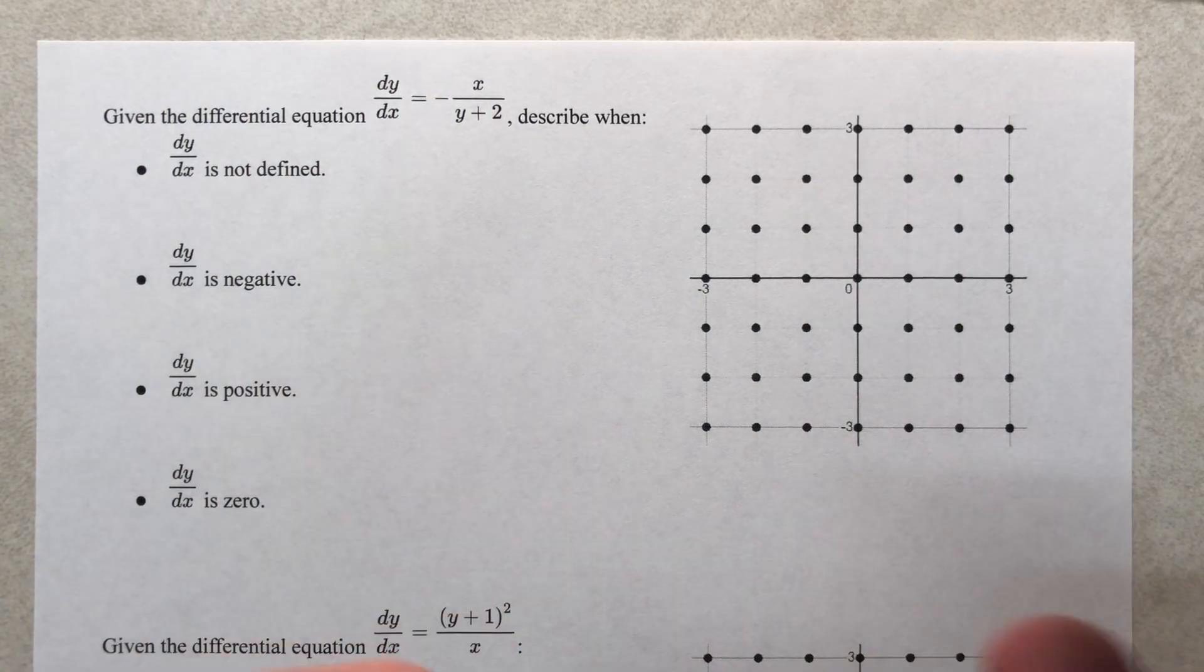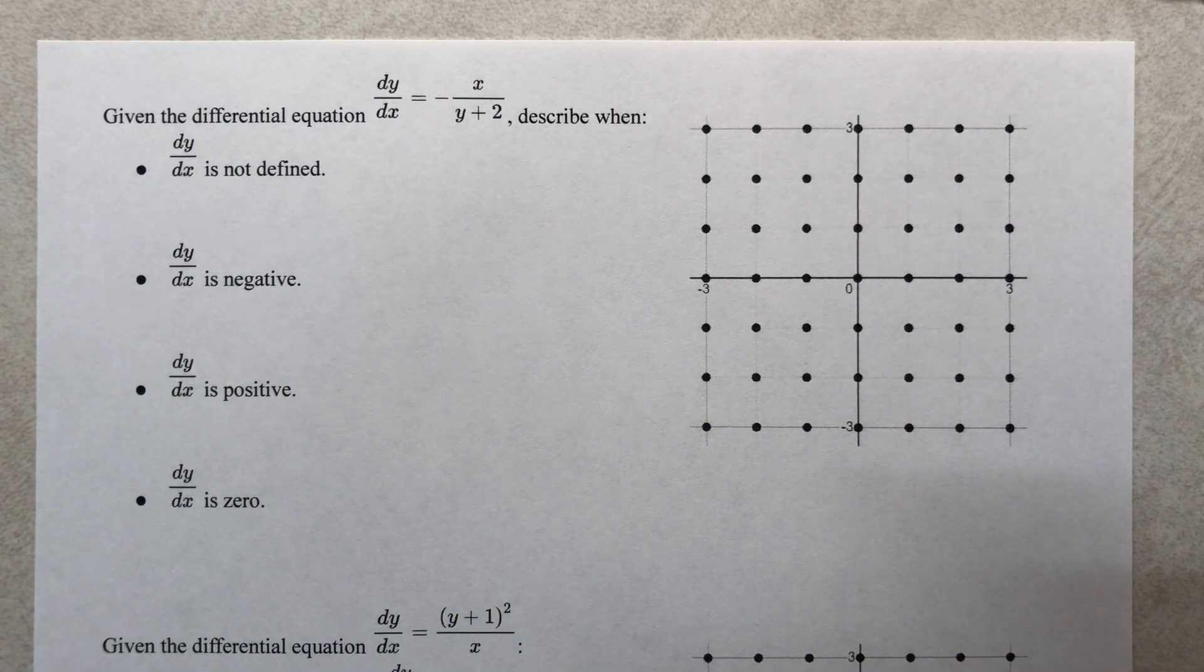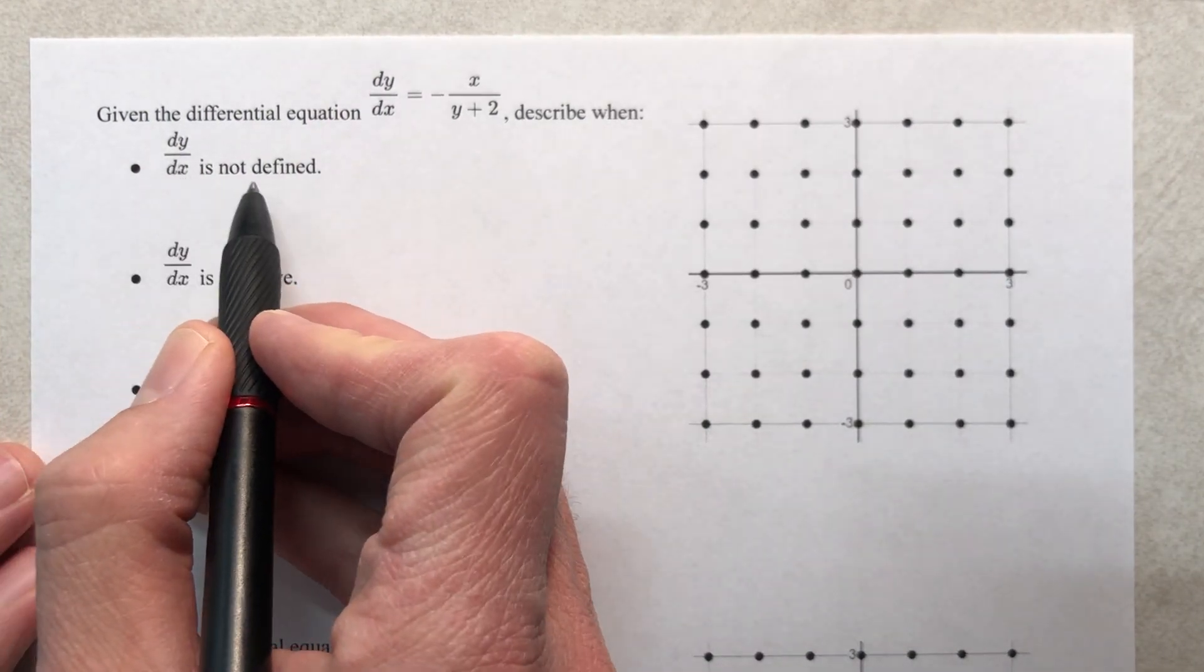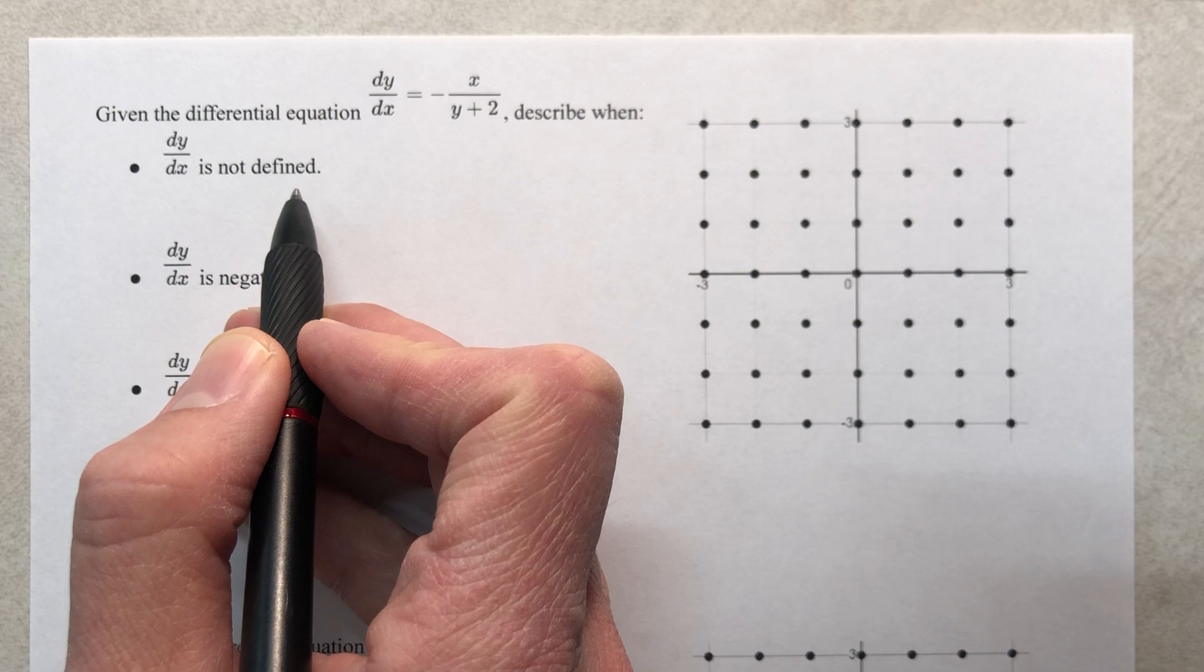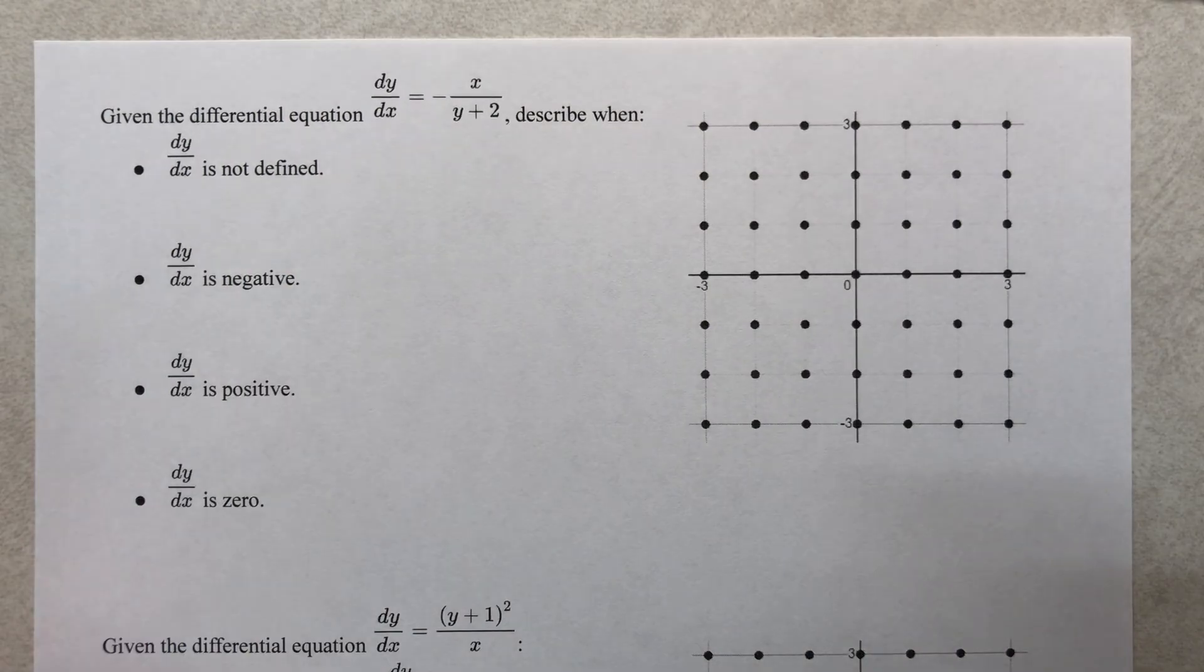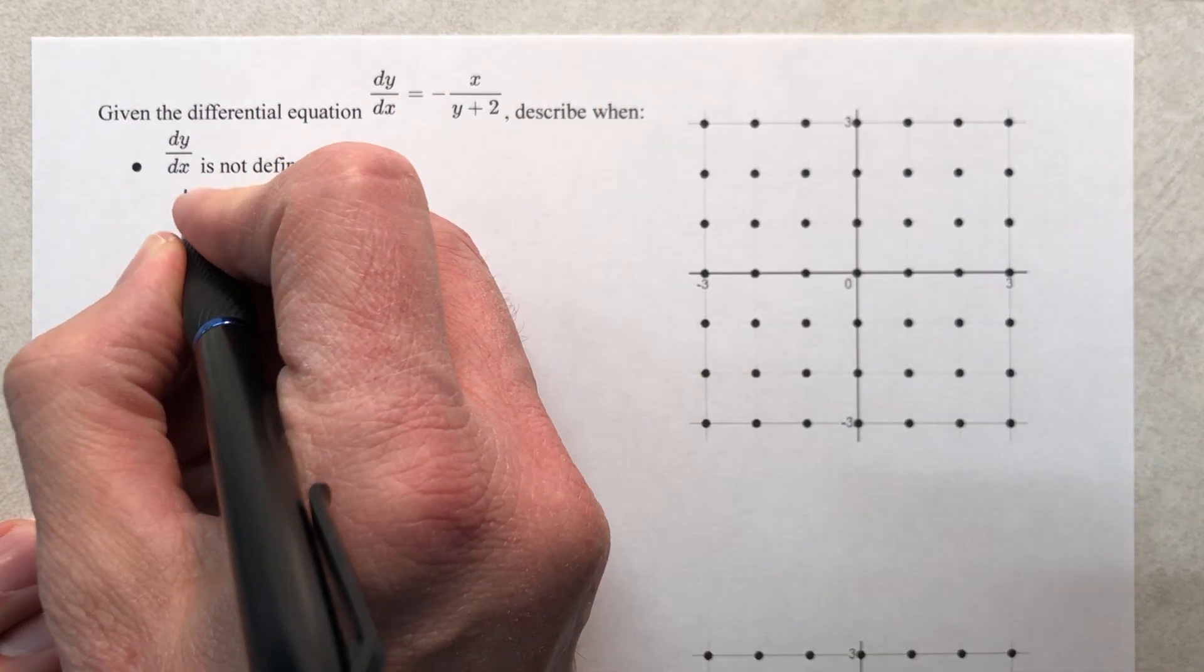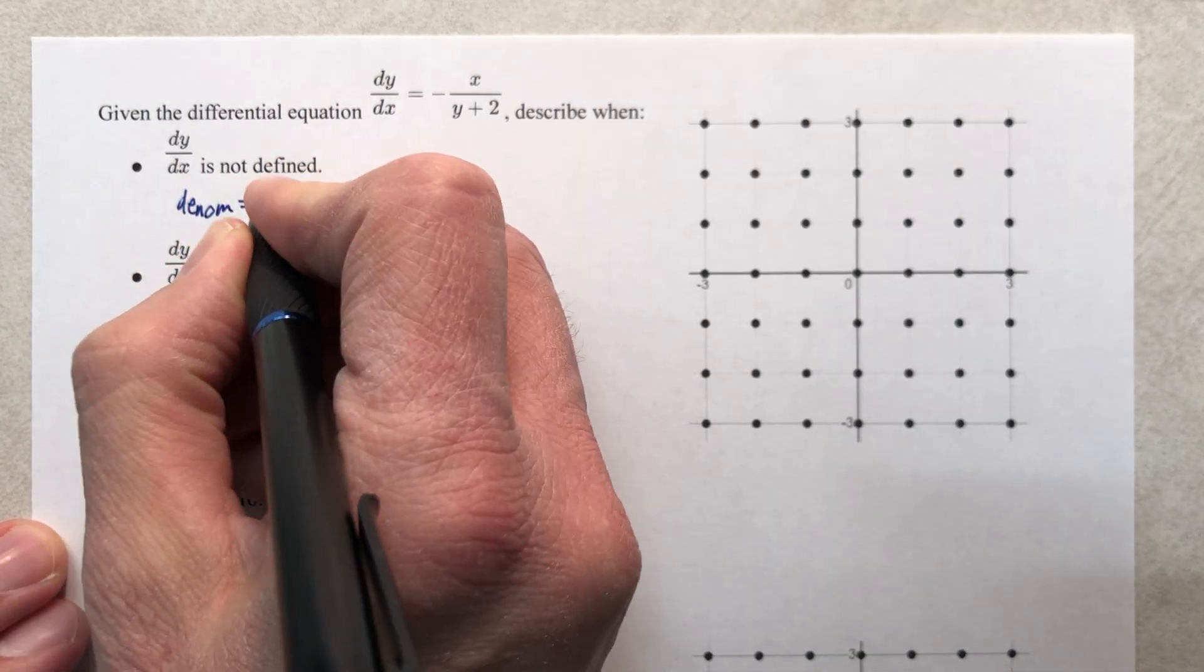This is there for reference. If we need it, we might need it, we might not. So let's just jump in. The slope is not defined. What makes a slope undefined? I'm going to make a few notes with a blue pen. That means the denominator is equal to zero.